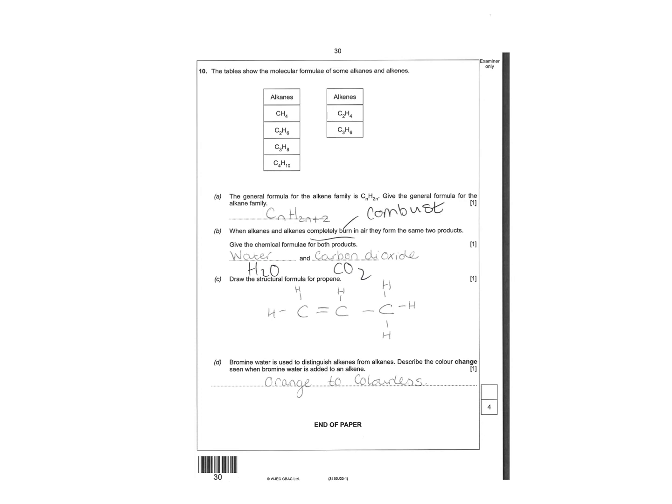Structural form of propene - that's one, two, three, four, five, six. Bromine water is used to distinguish between alkenes from alkanes. Describe a color change - go from orange to colorless.